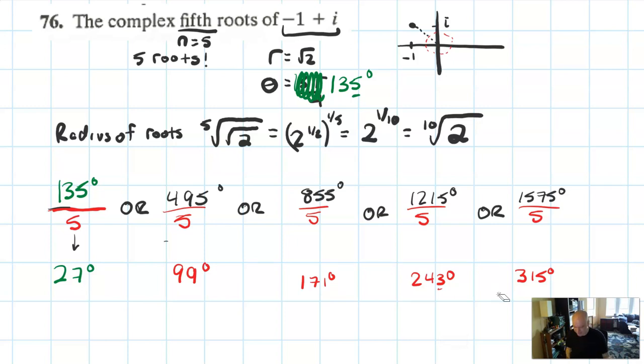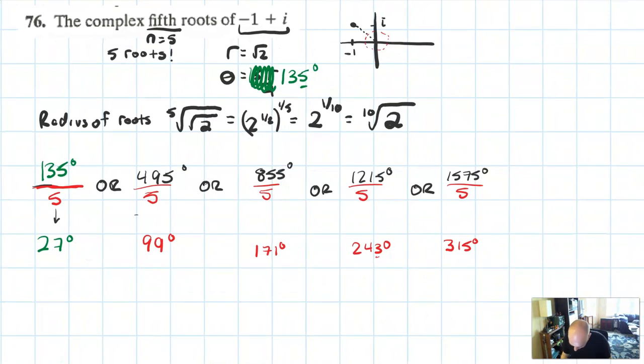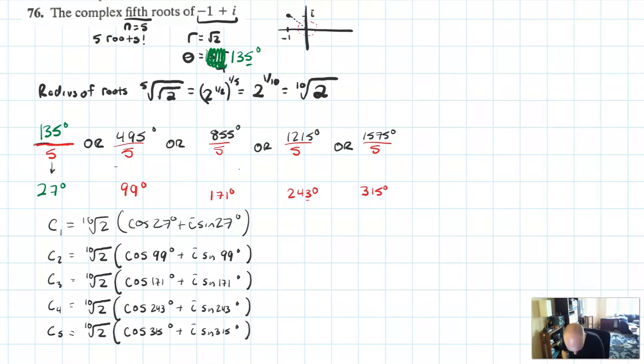So basically if you imagine taking the fifth power of each of these, you'd be working backwards, you'd multiply them by 5, you'd arrive at a coterminal of 135, which would mean you're at the same spot on the complex plane. So what are the complex roots of negative 1 plus i? The fifth roots. Well, complex root 1 would be the tenth root of 2, cosine 27 plus i sine of 27. And so on. There they all are written for you.